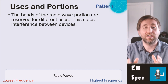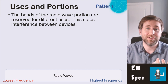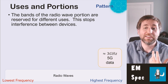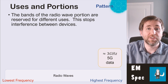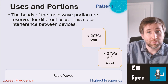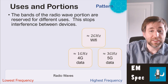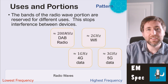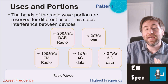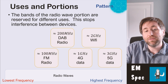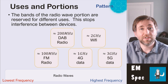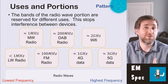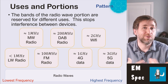Different devices communicate in different frequency bands so they don't interfere with each other. The 5G portion is around 3 GHz for high data transfer; WiFi is around 2 GHz; 4G is around 1 GHz. DAB digital radio is around 200 MHz; FM radio is around 100 MHz and is used for music because of its high fidelity at that frequency. Medium wave and long wave — very good for long distances, diffracting around objects like buildings or hills — is very good for broadcasting audio data over long distances.